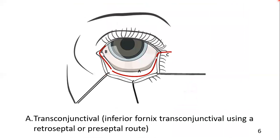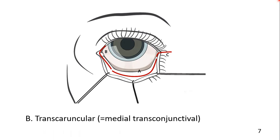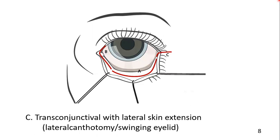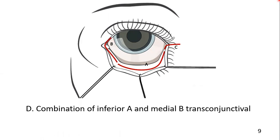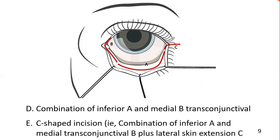Transconjunctival lower eyelid approaches are performed in several ways. One is transconjunctival inferior fornix. Another is transconjunctival with lateral skin extension, that is a lateral canthotomy. A third is the combination of inferior A and medial B and C-shaped incision — that is the combination of A, B, and C.